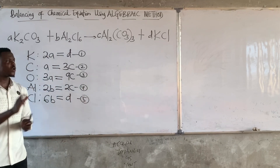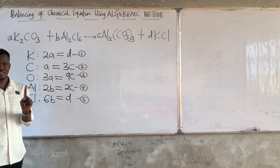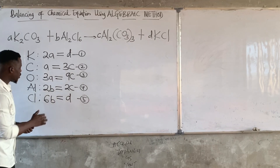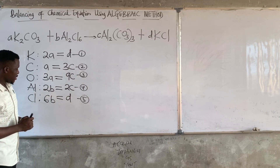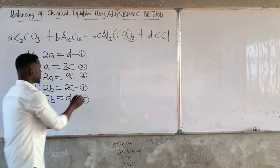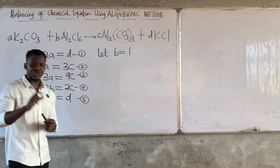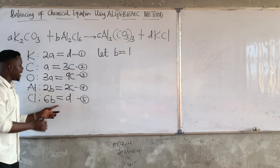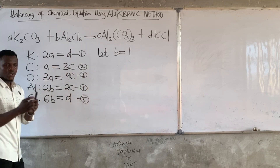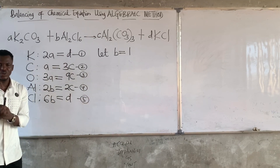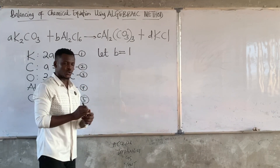The next step says: choose one of these coefficients and assign it a value of 1. Any one of the coefficients. For myself, I am going to give B the value of 1. There is no rule that says it must be B — you can give it to A, B, or C — but make sure you choose the one that will help you get the others easily. For this particular equation, I will say let B = 1.